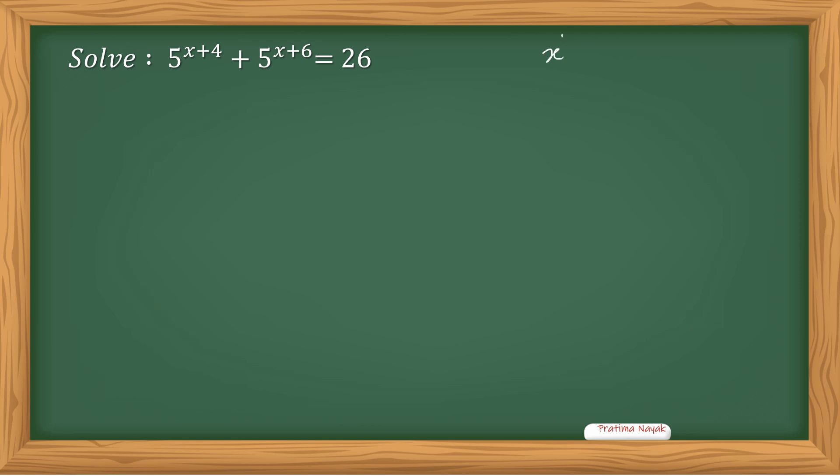So here we know that m plus n is same as x raised to the power m times x raised to the power n.